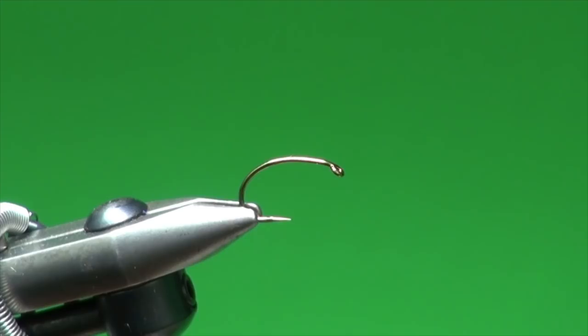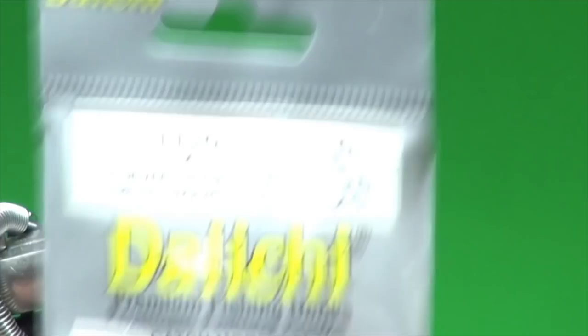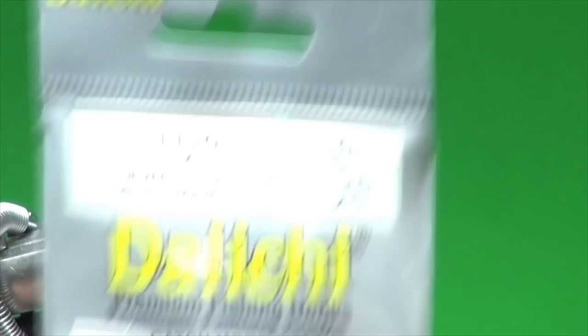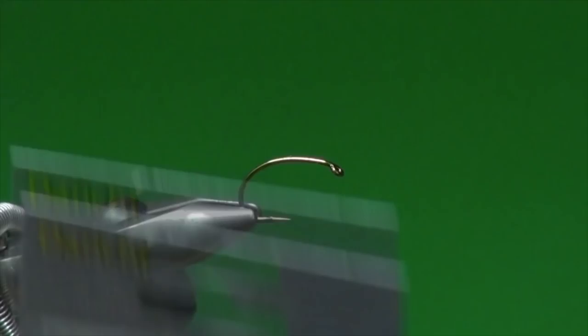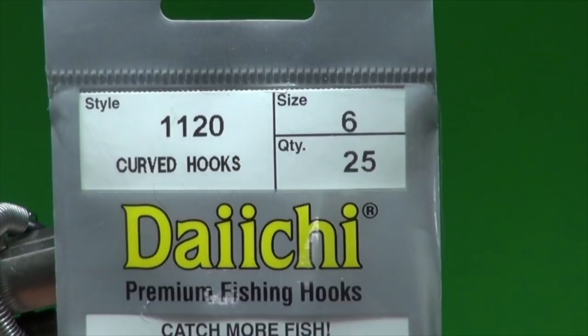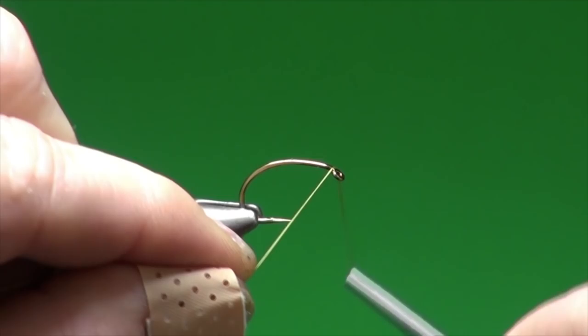So let's tie you a Foam Creeper. It's a simple dragonfly nymph pattern. And you're probably wondering, dragonfly nymph, big long bug, why do I have a scud hook in? All will be explained. Into the jaws of the vise, I've got a Daiichi 1120 size 6 curved scud hook. You can tie them on an 8 as well. And we're just going to start the tying thread, which is UTC 140. It's a heavy thread because we're going to be securing some foam and things down. So we want to make sure we have a good purchase on it.